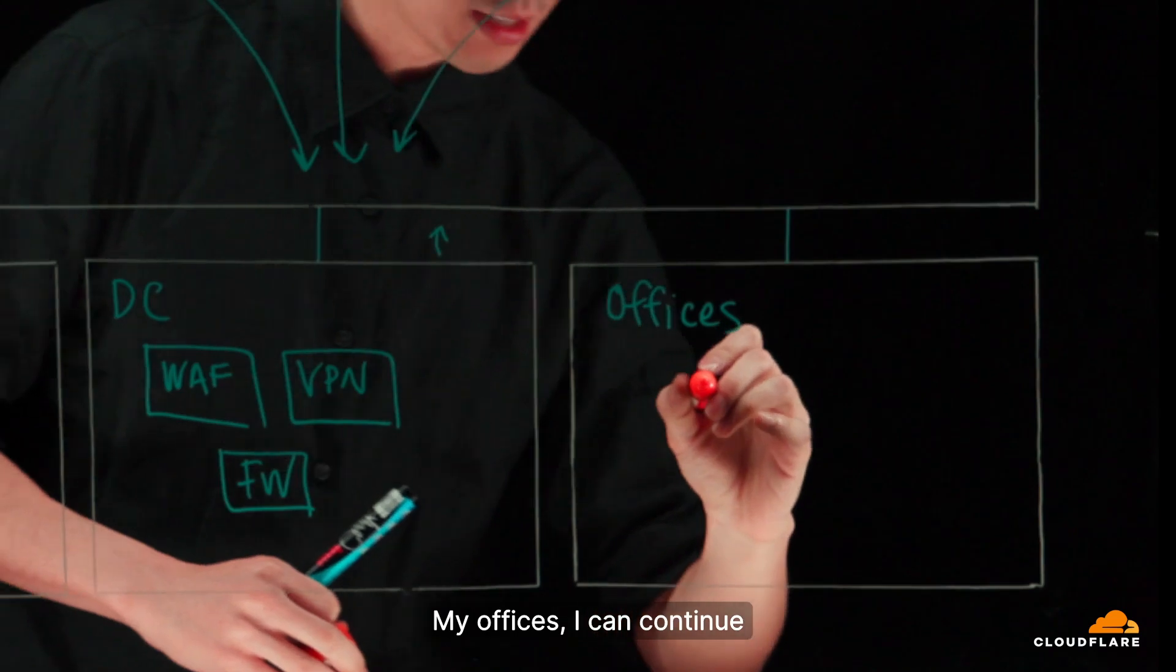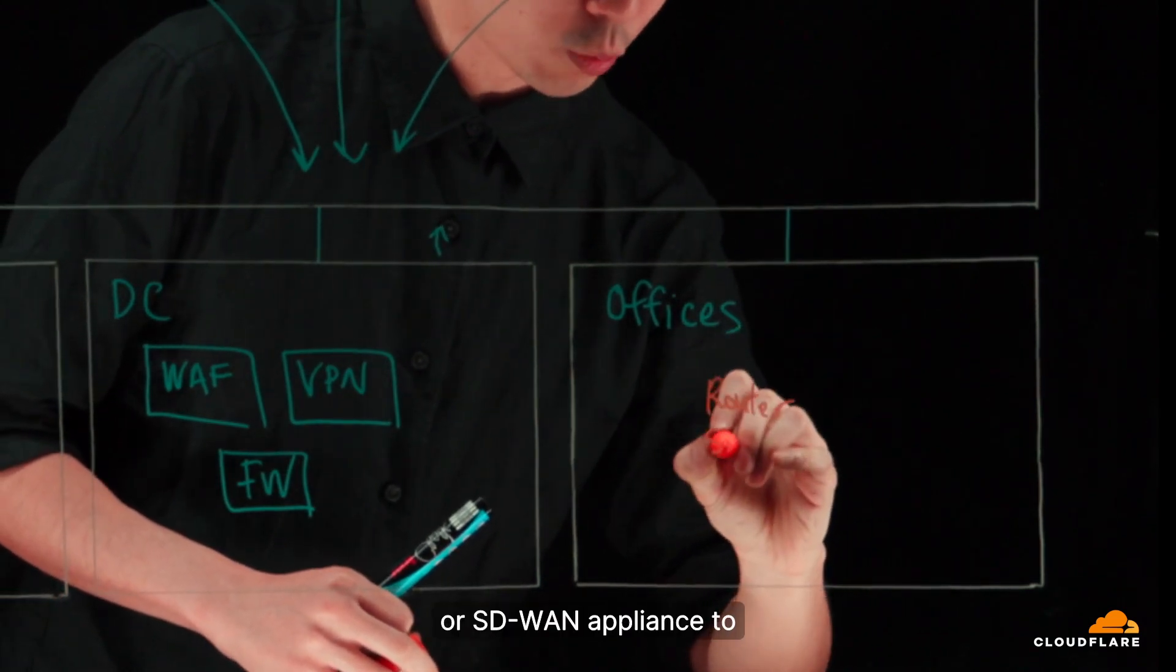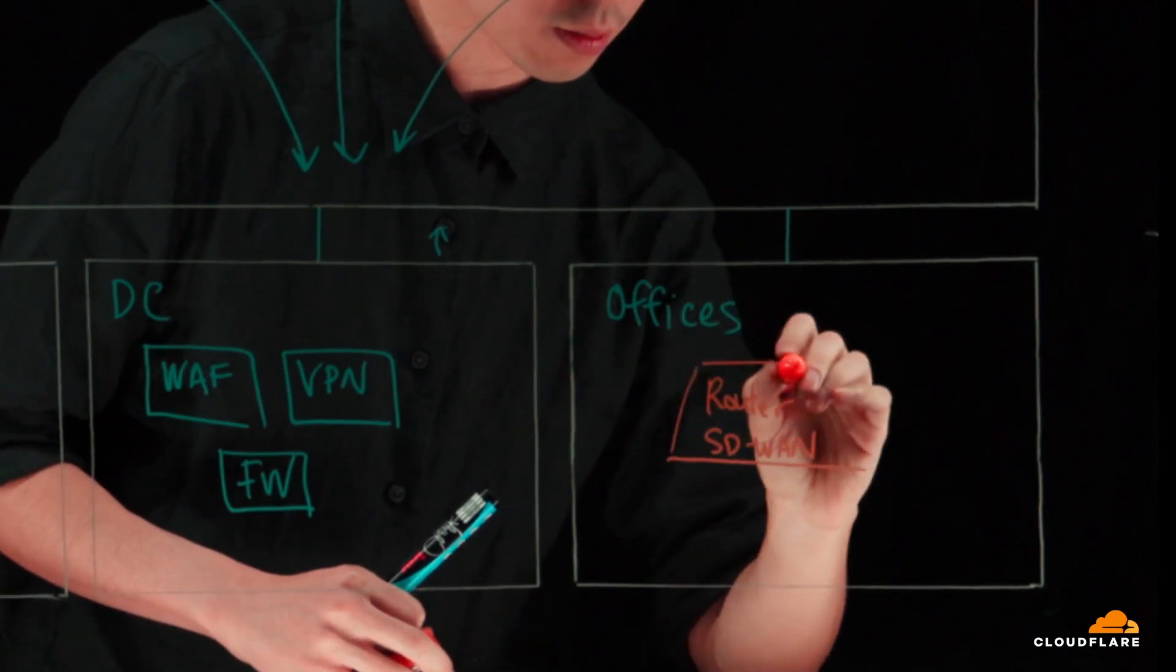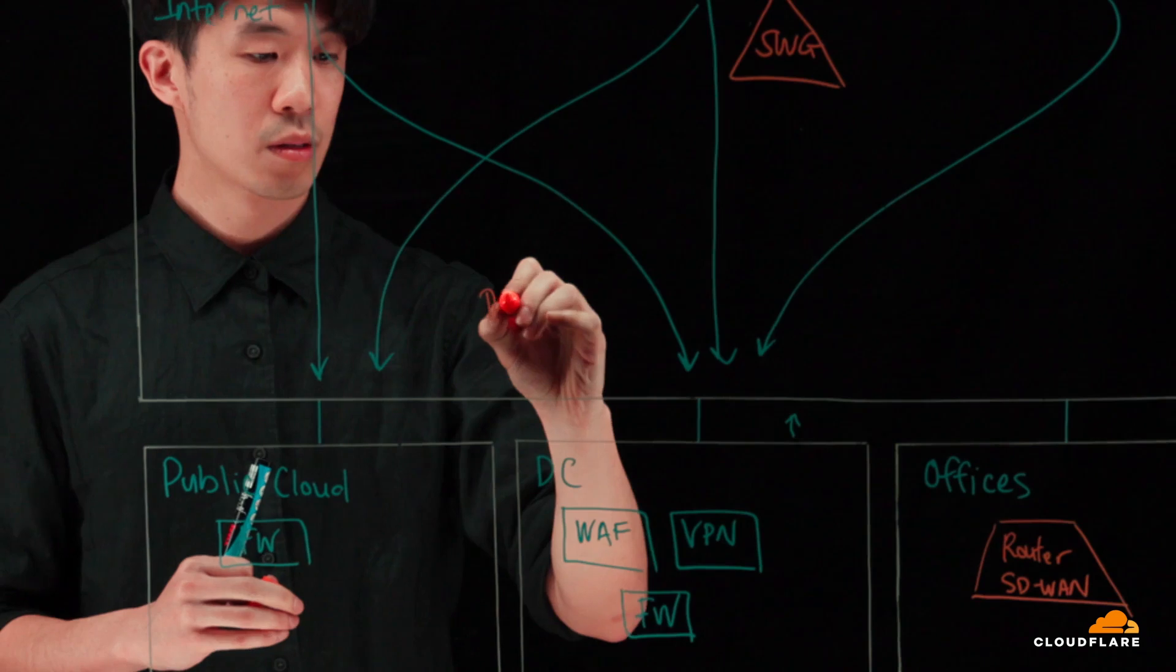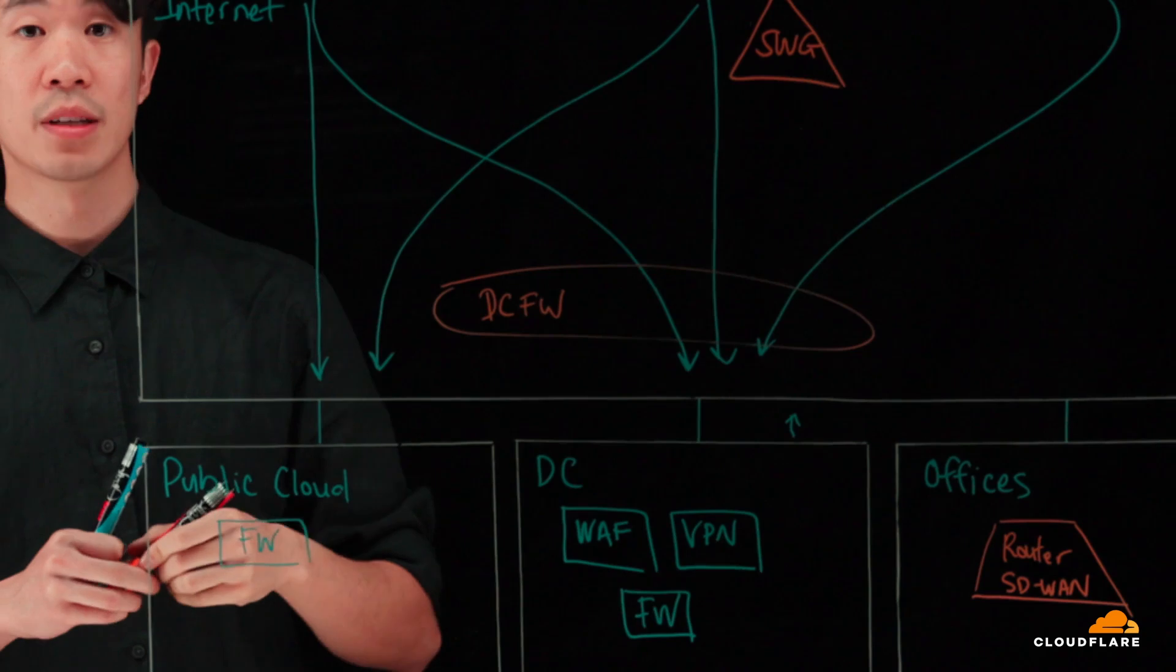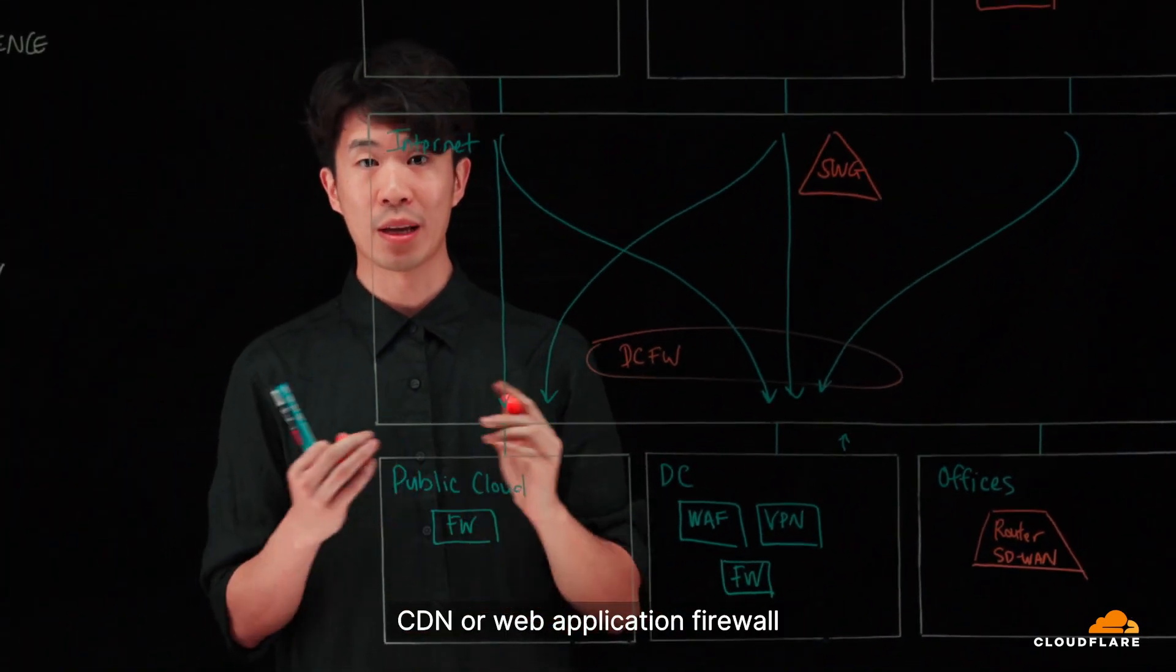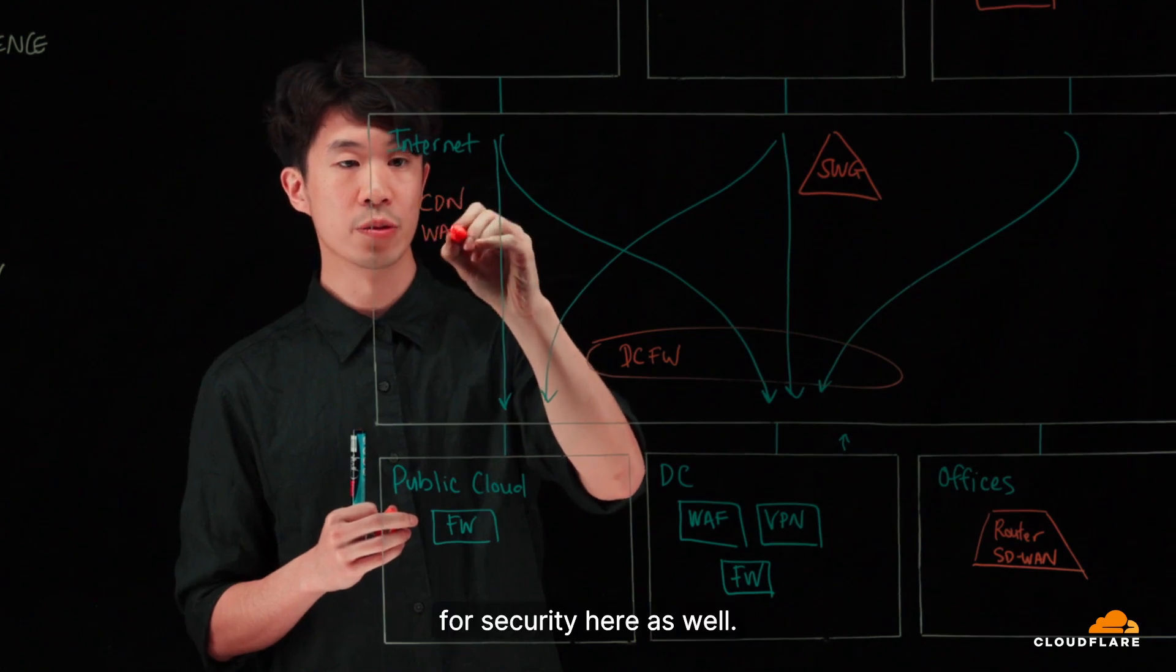My offices, I can continue leveraging my traditional router or SD-WAN appliance to provide connectivity. For my data center firewall, I can leverage yet another vendor to provide the inspection there. And for my customers, I can leverage a CDN or web application firewall for security here as well.